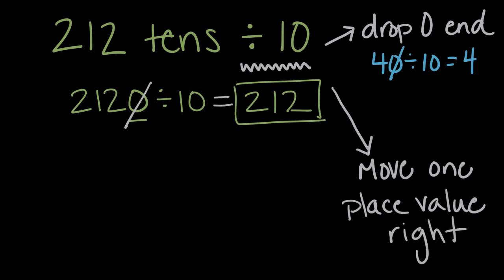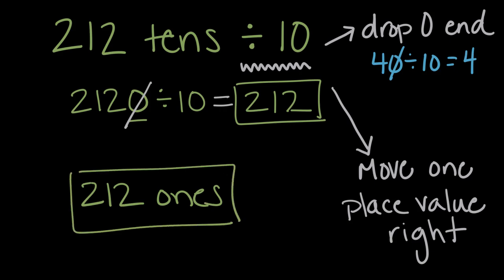So what's one place value smaller than 212 tens? If we have 212 tens divided by 10, we want to move this tens one place value to the right, or smaller, which is ones. So our solution would be 212 ones, which is equal to what we already saw, simply 212. So 212 tens divided by 10, we could write the number out and drop a zero, or we could think about place value and move one place value to the right. Either way, our answer is 212 ones.